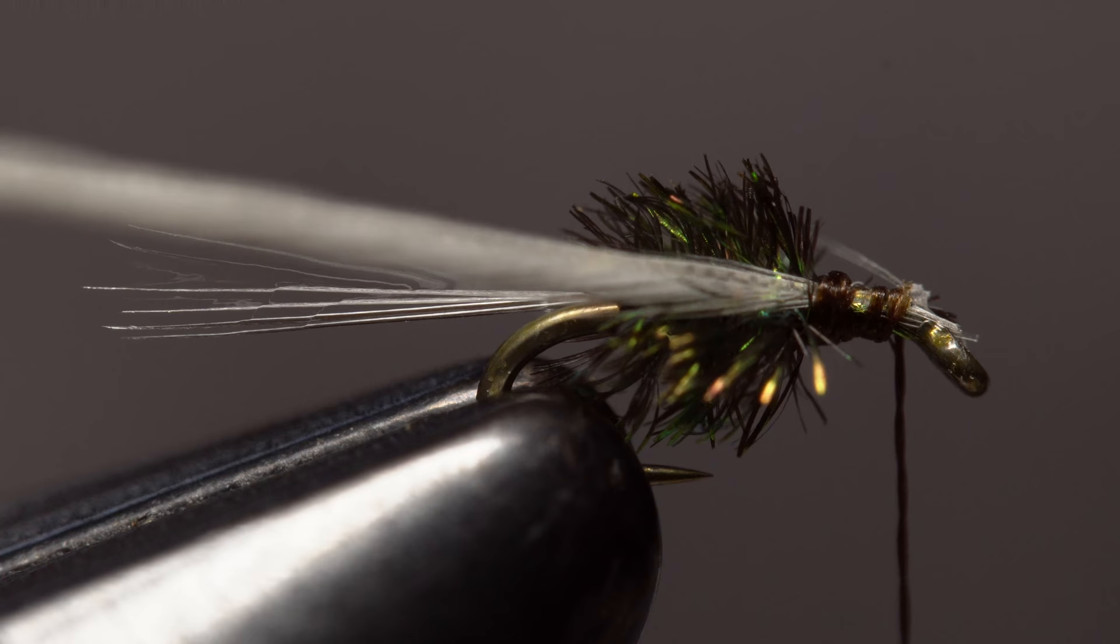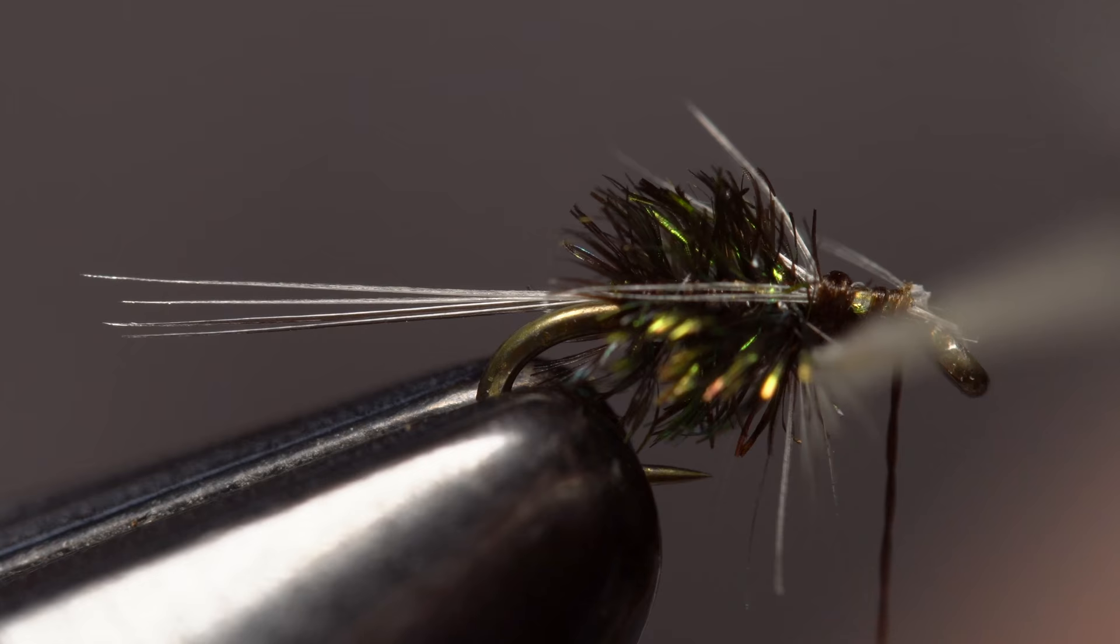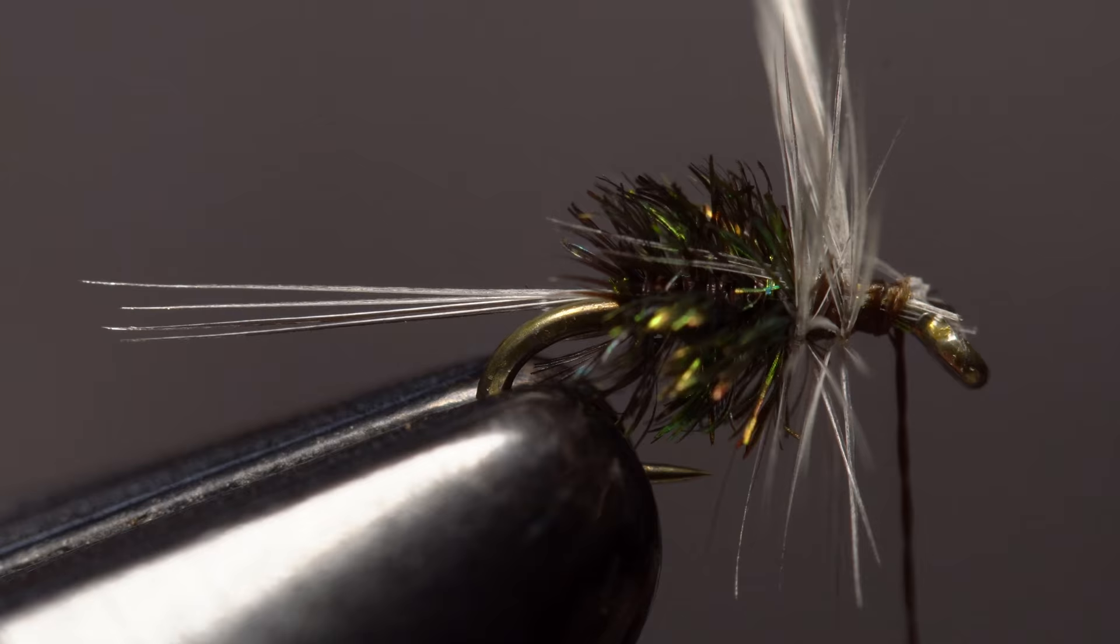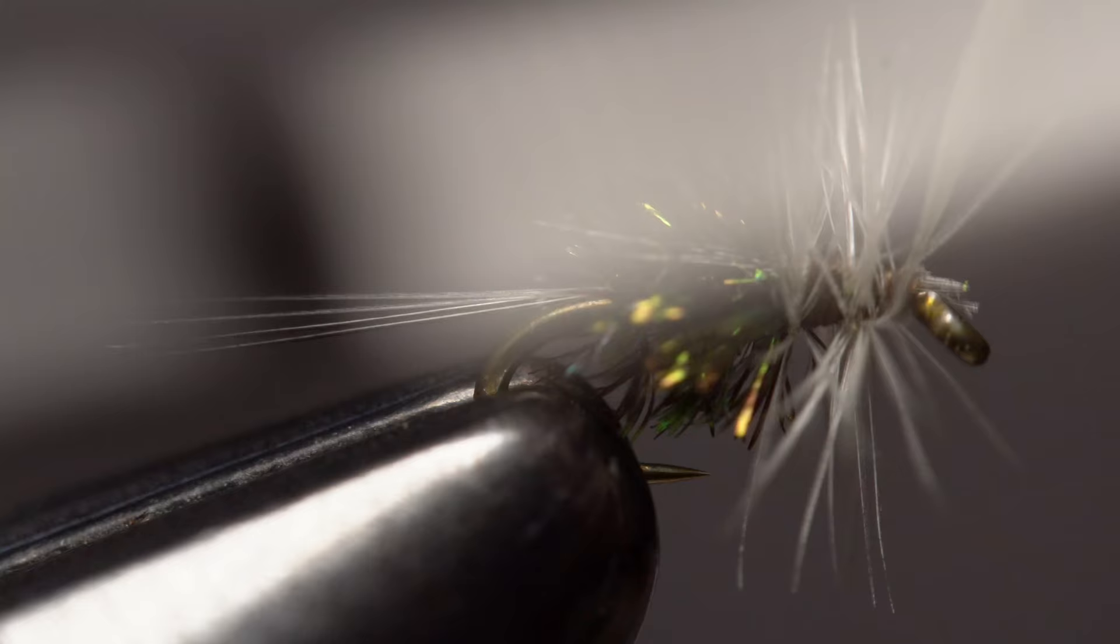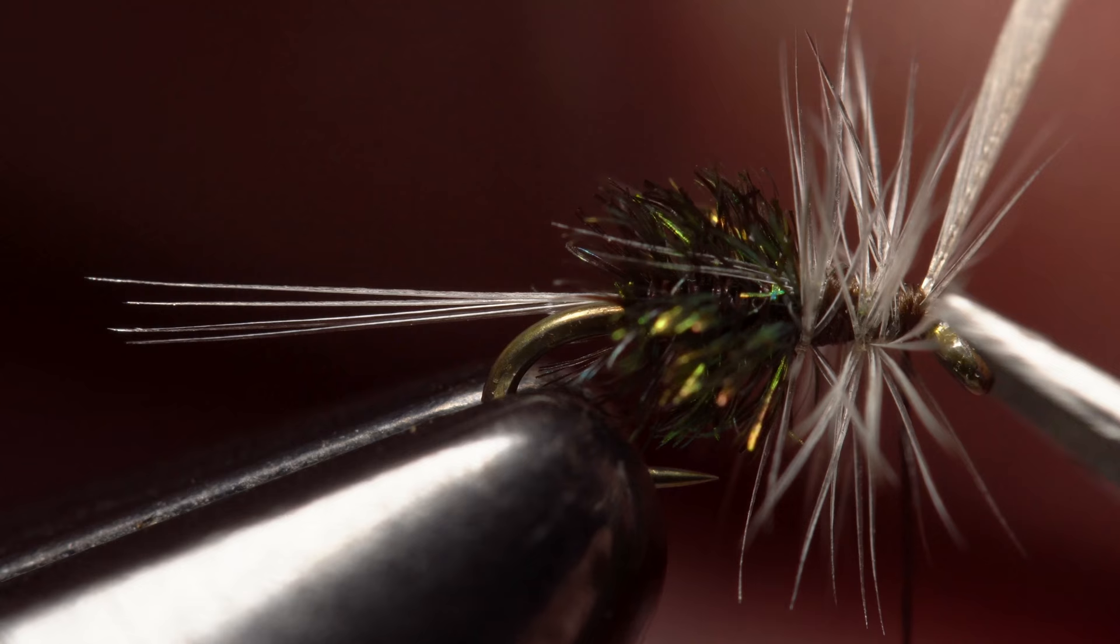Get hold of the feather with hackle pliers and start making touching wraps forward. If you maintain the correct feather orientation, the shiny side should face forward and cause the fibers to cant slightly rearward as opposed to forward over the hook eye. This is important as it prevents hackle fibers from being trapped as you take thread wraps to secure the tip. Once you've got it locked down really well, reach in with your scissors and snip the excess tip off as close as possible.